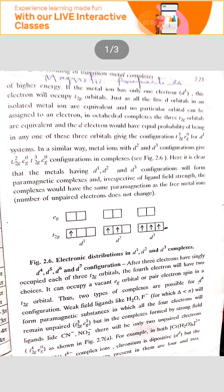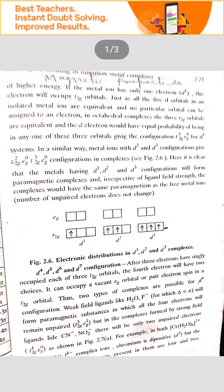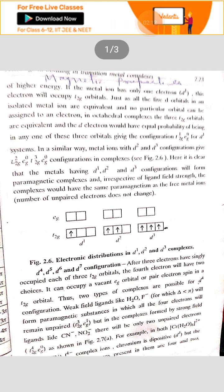then the compound is paramagnetic and when it has the electronic configuration of T2G4, then it is paramagnetic equal to 2 electrons.